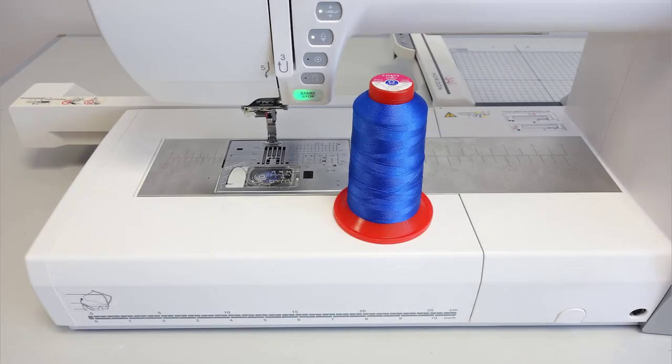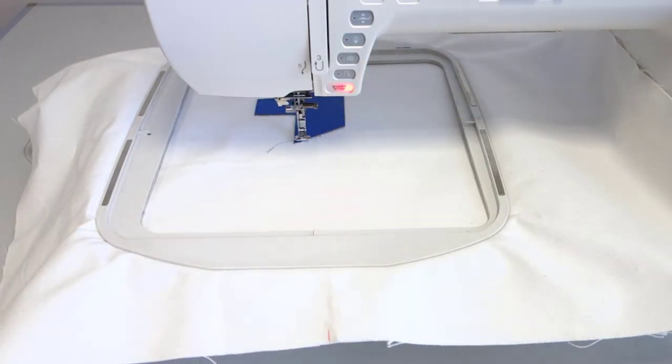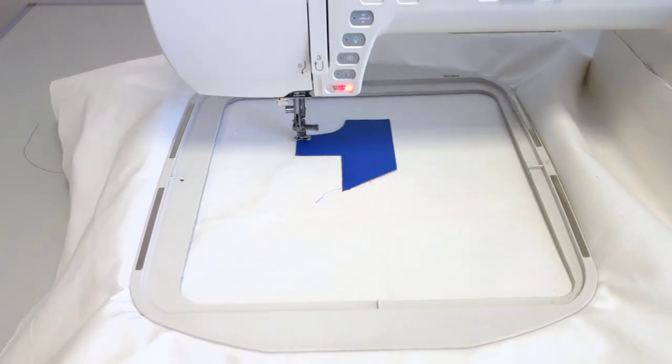Before starting the applique stitch, match the thread color to the color of the applique fabric. Attach the hoop to the machine. The holding stitches of the applique will be first.